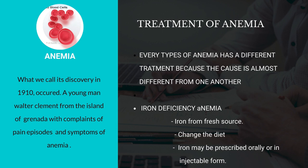Treatment for different types of anemia. Number 1, iron deficiency anemia. We have the following options: First, take iron from fresh sources. Second, change the diet. Third, the doctor may prescribe iron in oral or injection form.